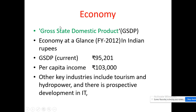Next, economy. What is the meaning of economy? Economy is related to money. We will call it GSDP — Gross State Domestic Product. What is the export, what is the import — these all come under economy. Here, GSDP is nearly 95,201, and per capita income is nearly 1,03,000. Other key industries contributing to the economy include tourism, hydropower, and IT companies, which are also playing an important role in the economy.